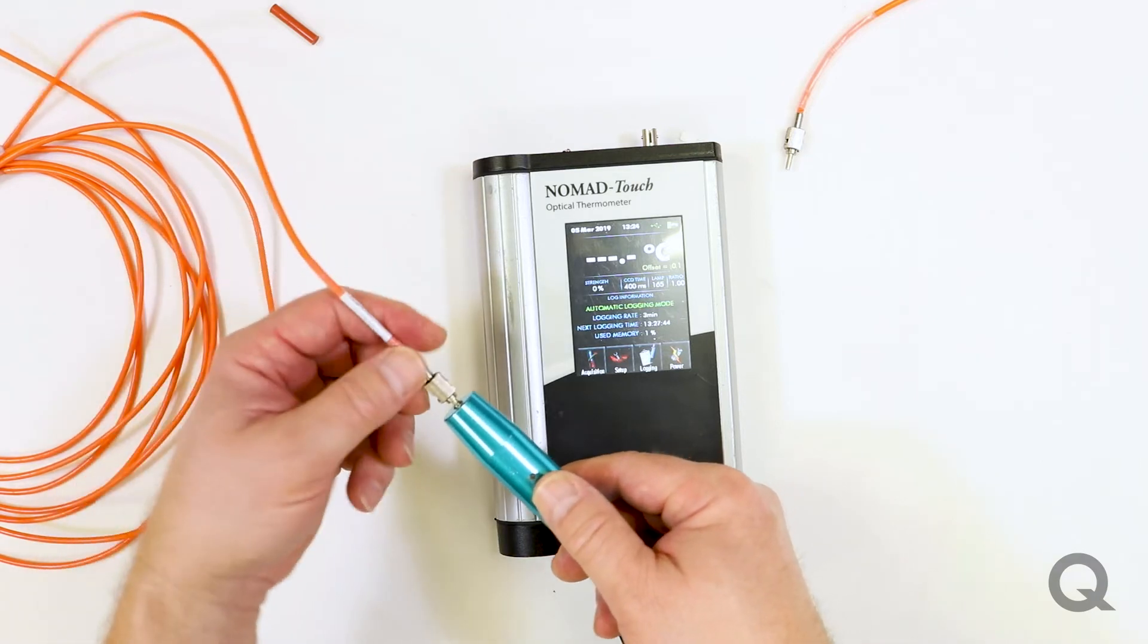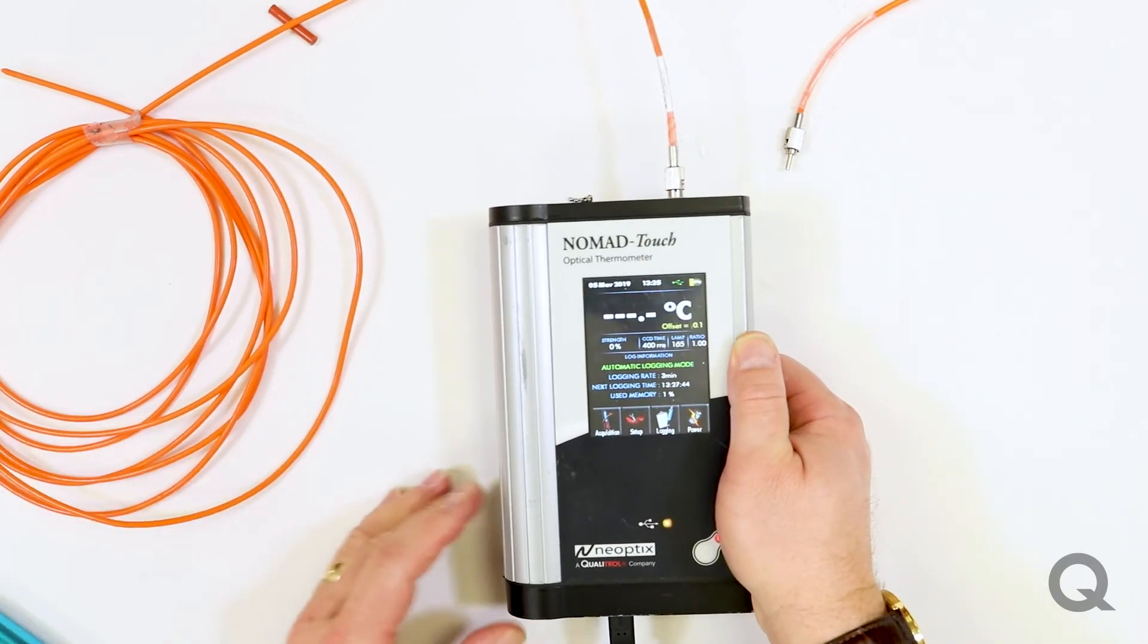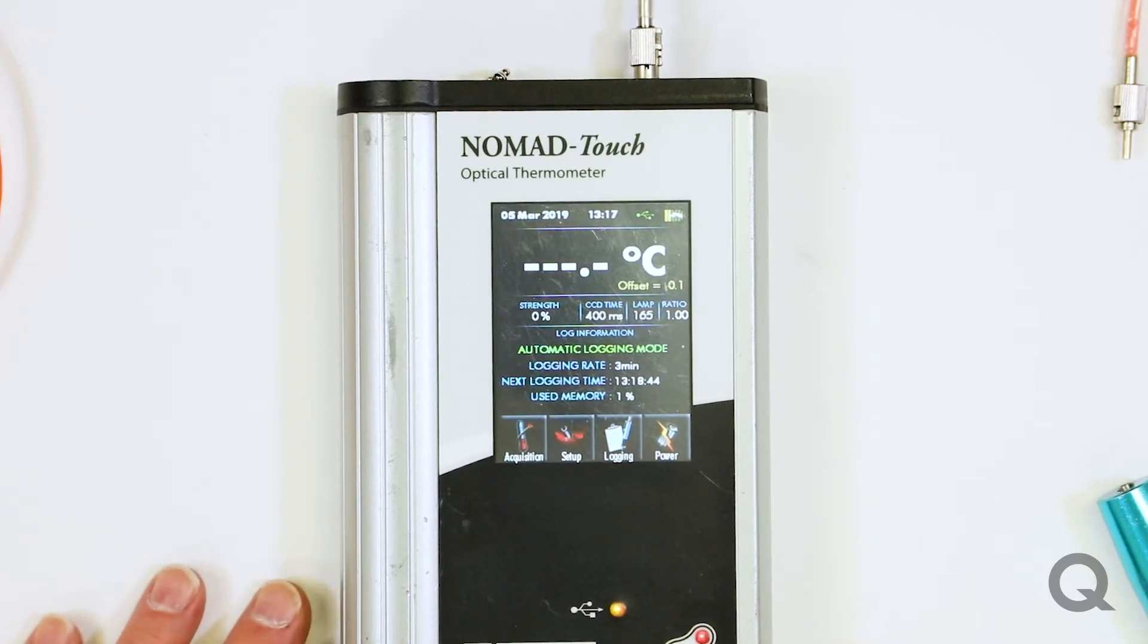Now, if we were to take this fiber and hook it up to the Nomad, what you'll see is that our signal strength is zero and, of course, there's no temperature reading.